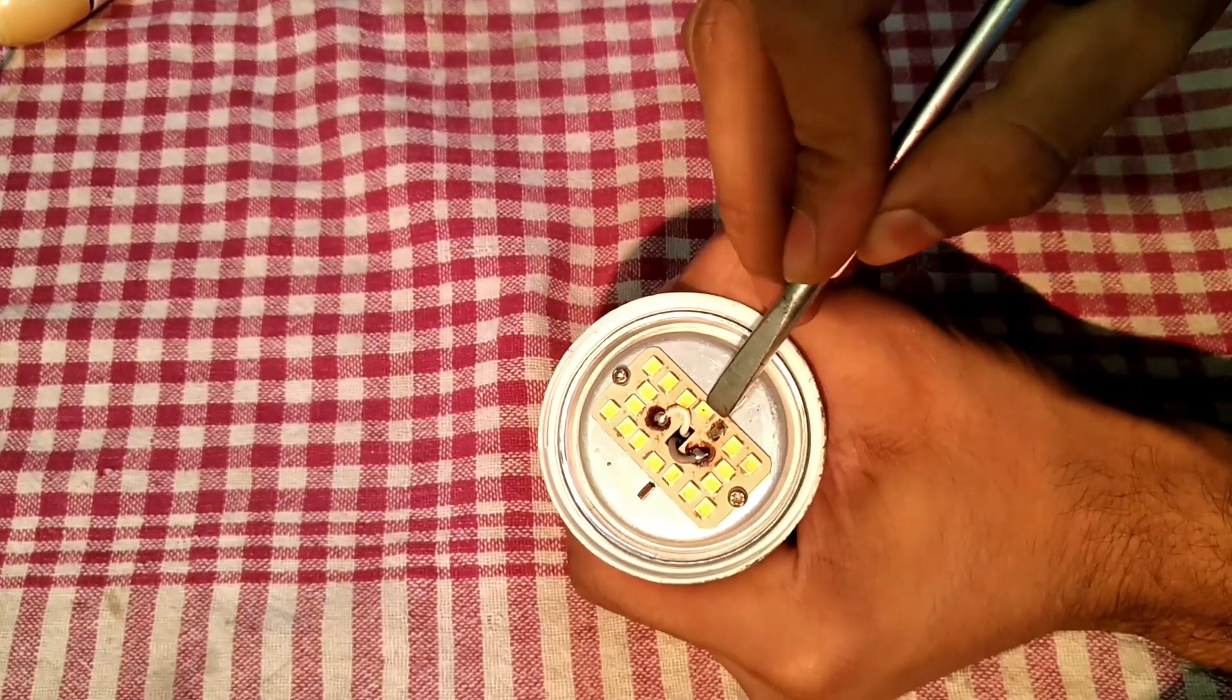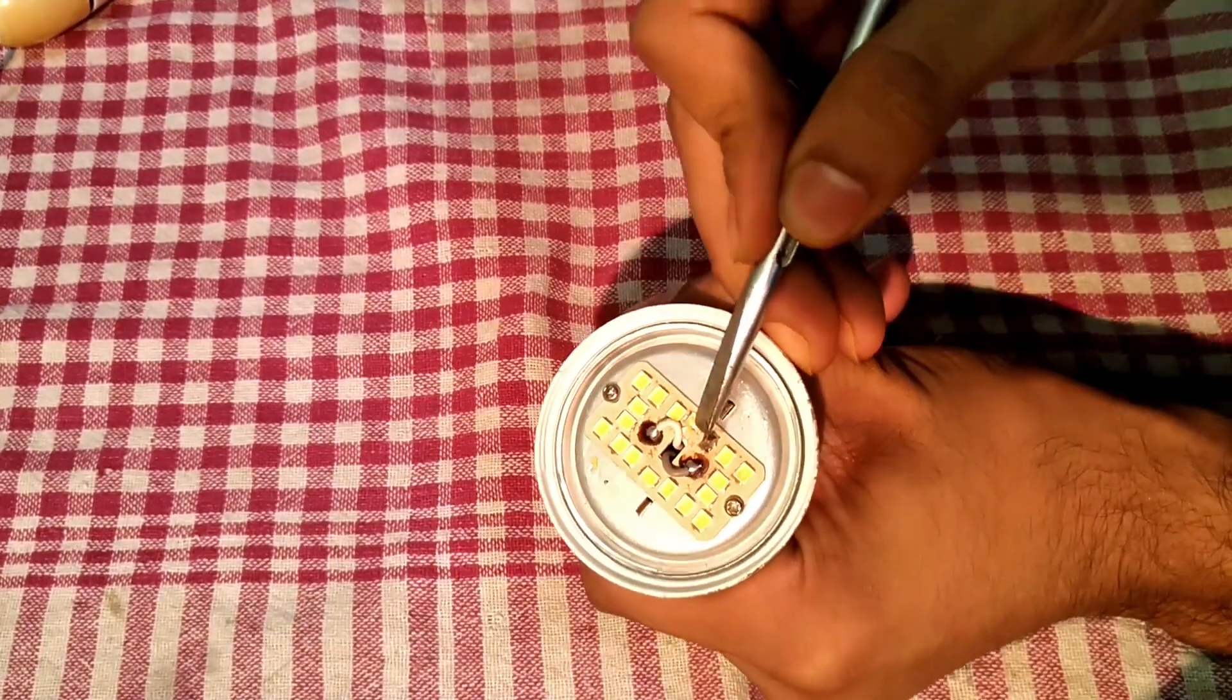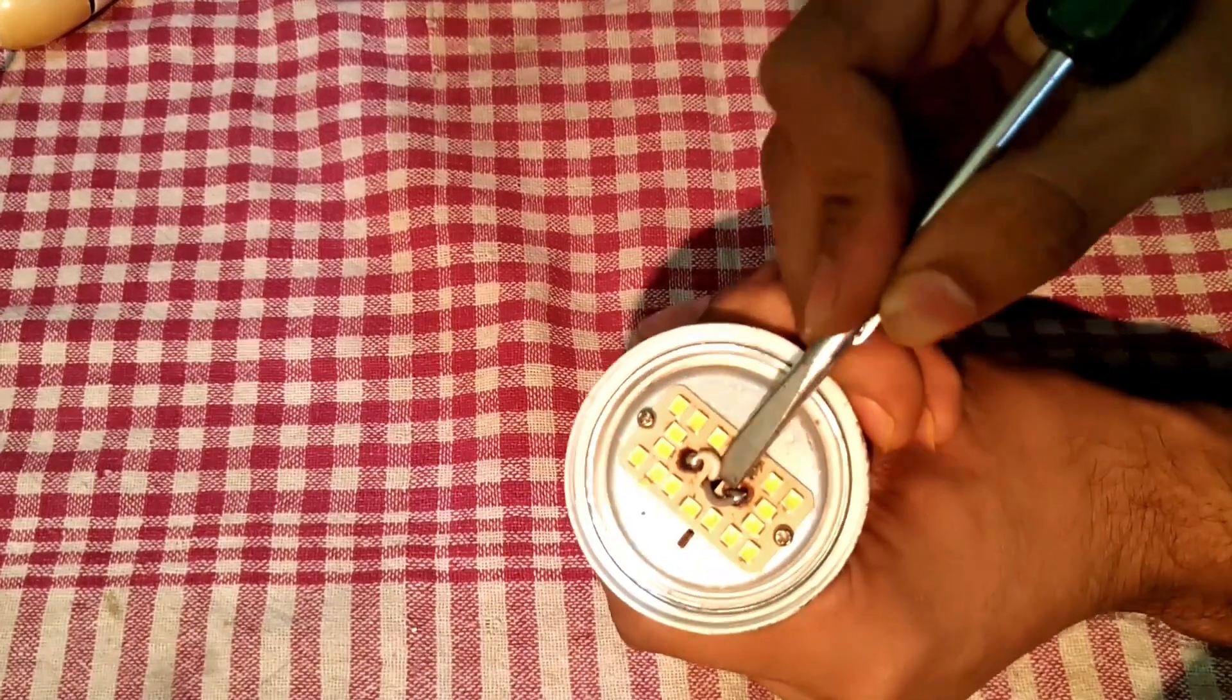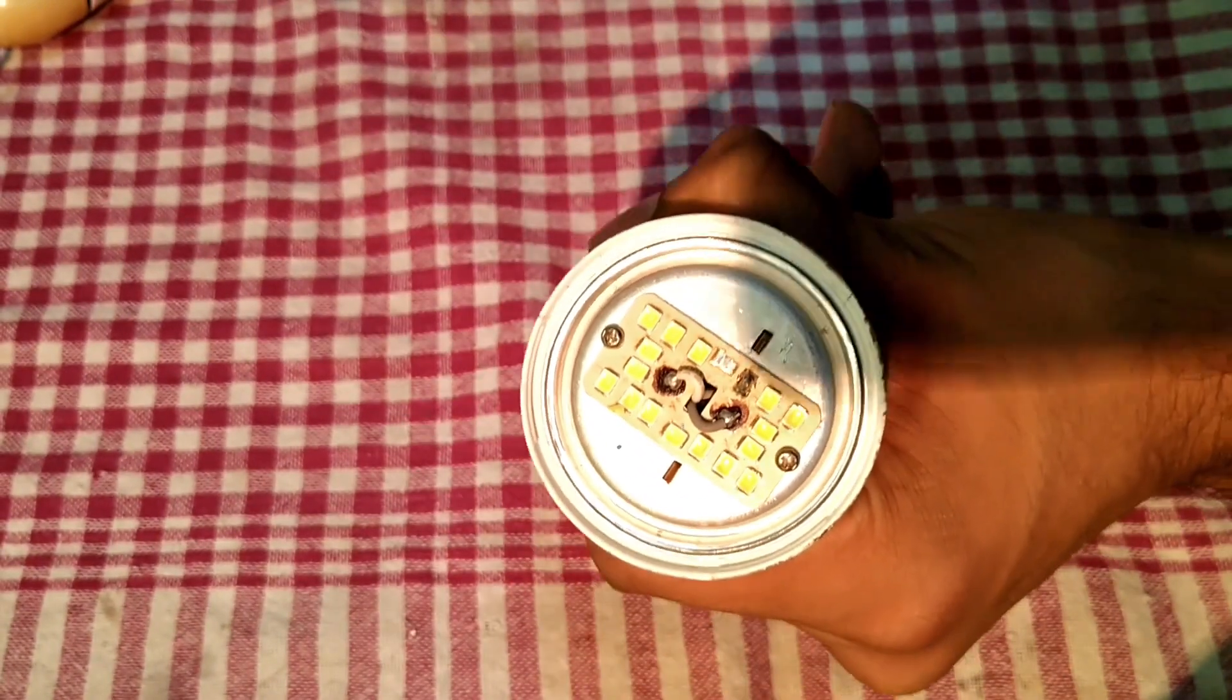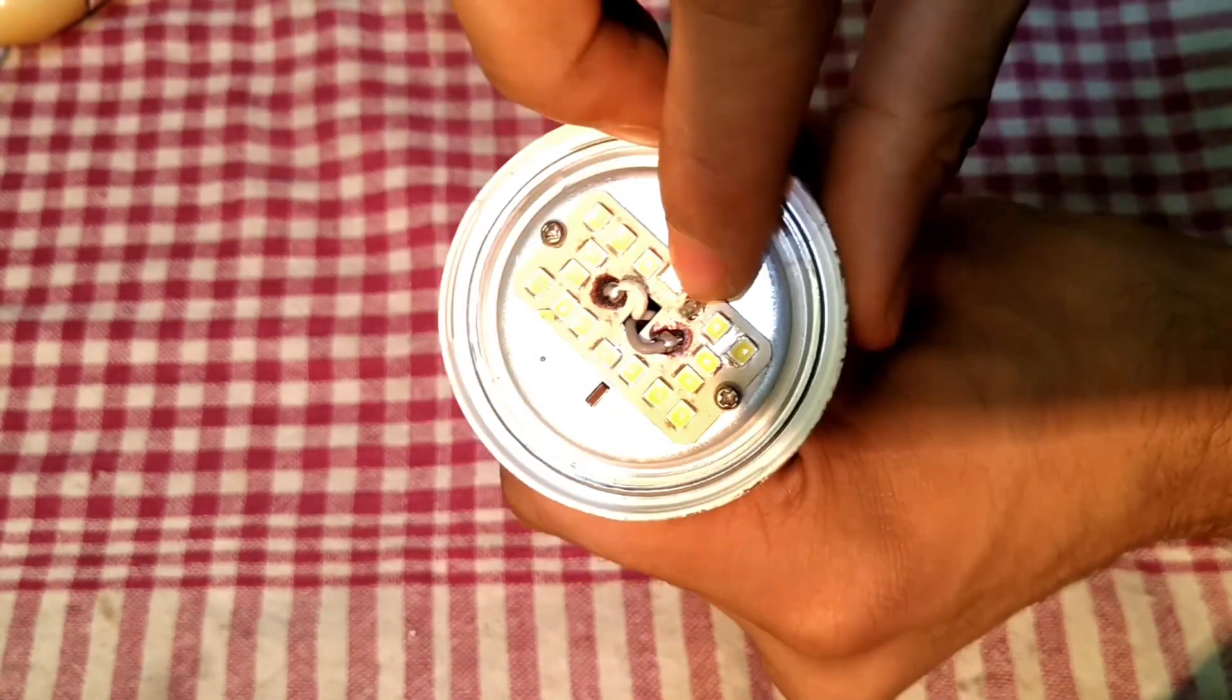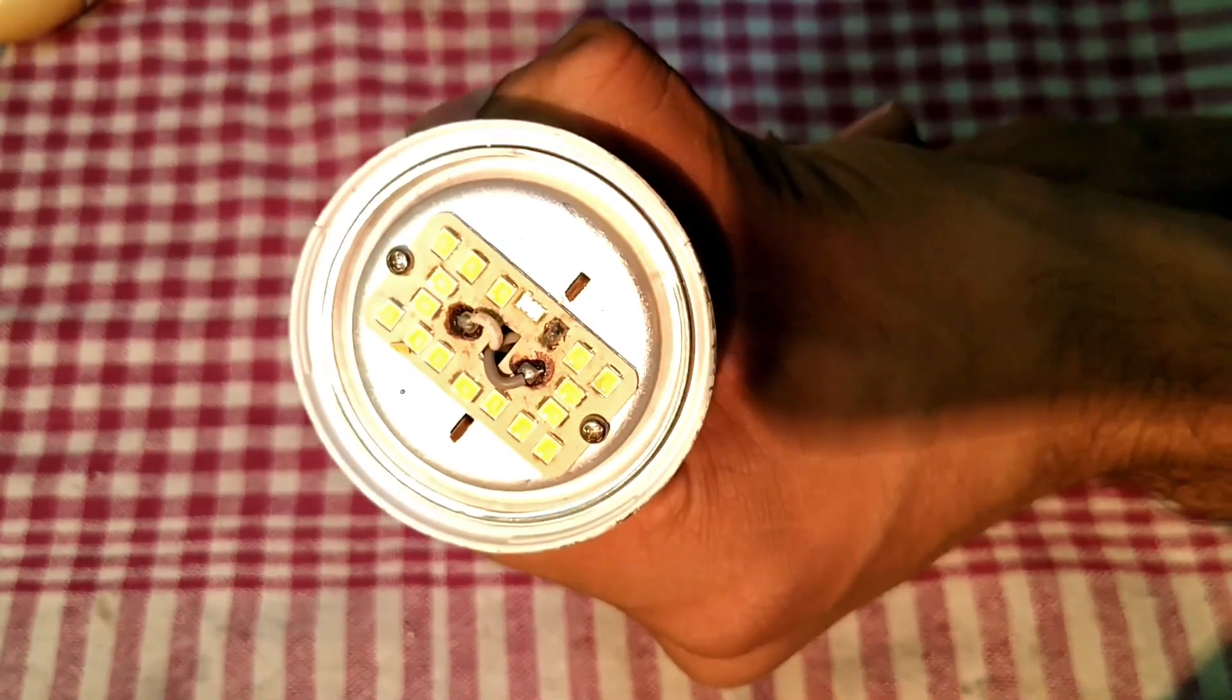Now, the easiest way to repair this is to remove the damaged LED with a sharp object like this screwdriver, and short the circuit using solder. It's that simple. I did the same process with this bulb which was damaged about eight to nine months ago. After repairing, the LED worked for eight months.